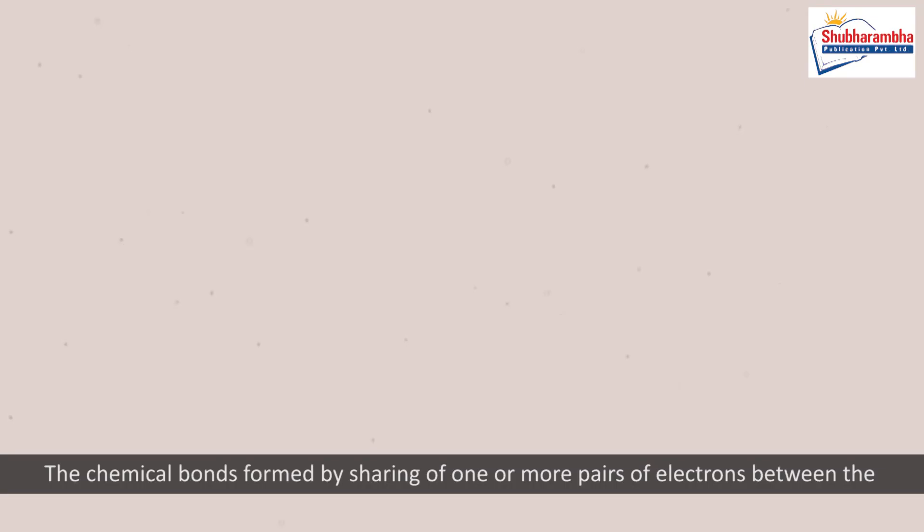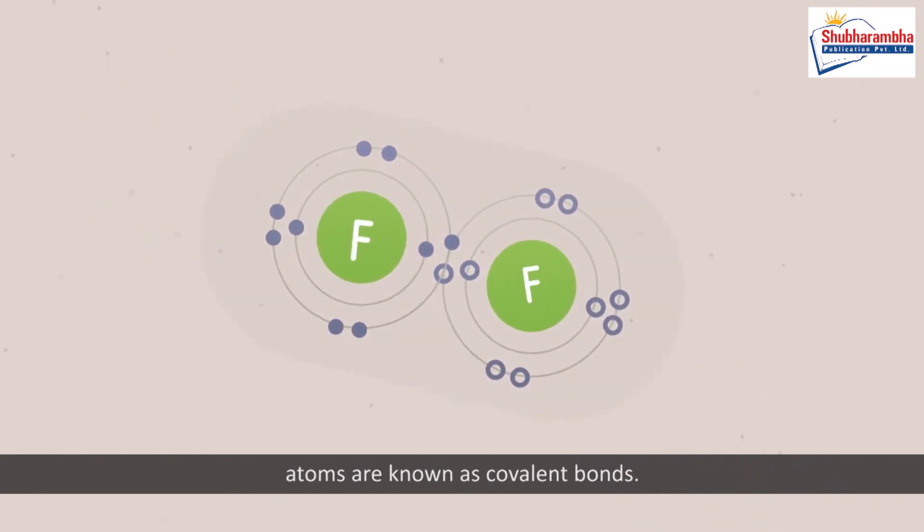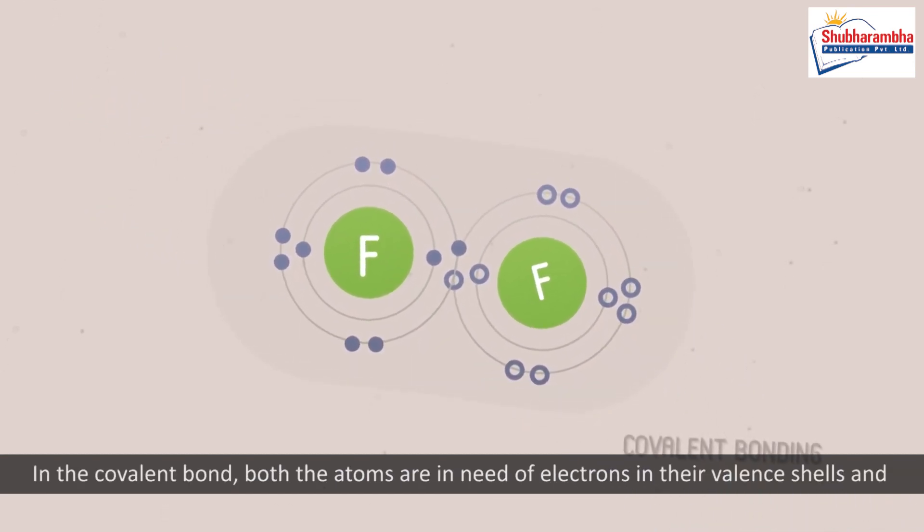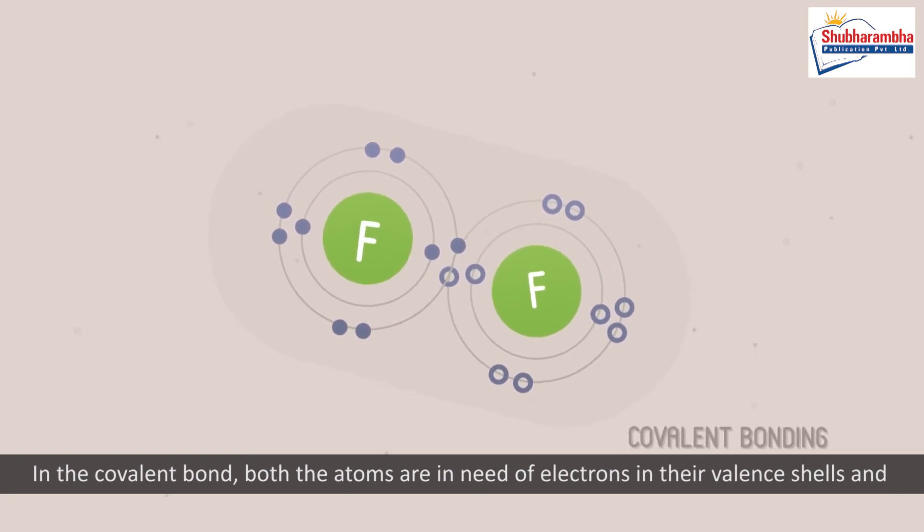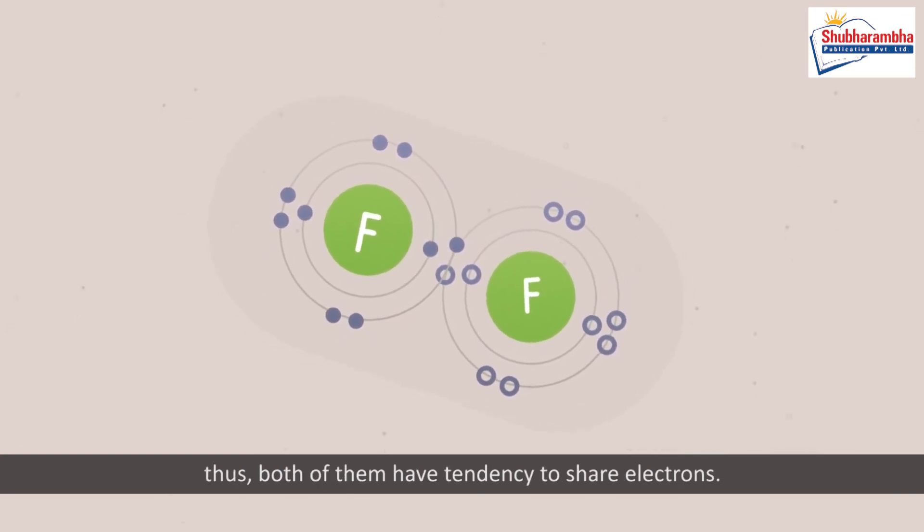Covalent bond. The chemical bonds formed by sharing of one or more pairs of electrons between the atoms are known as covalent bonds. In the covalent bond, both the atoms are in need of electrons in their valence shells, and thus both of them have tendency to share electrons.